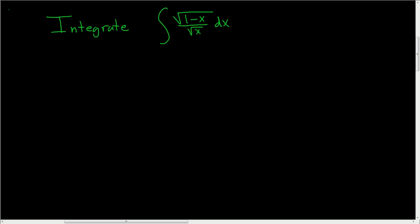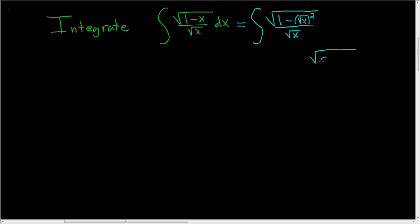We're faced with this indefinite integral, and we're going to use trigonometric substitution. The first thing you want to do is think of this as the square root of 1 minus the square root of x squared, all being divided by the square root of x. Recall that whenever you have an integral of the form a squared minus u squared, you can simply let u equal a sine theta.